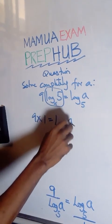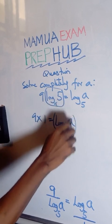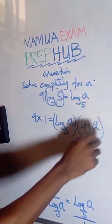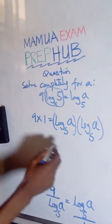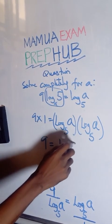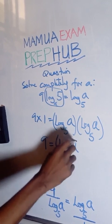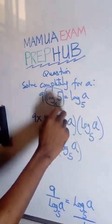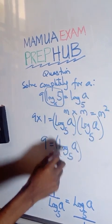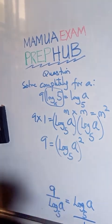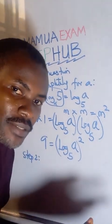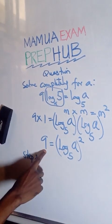So I have log base 5 of a multiplied by log base 5 of a. So this is going to give us log base 5 of a squared. So from this, we see that 9,